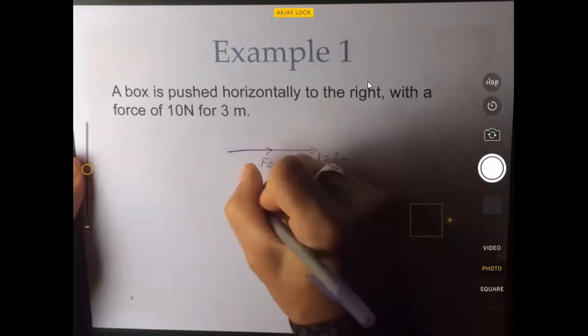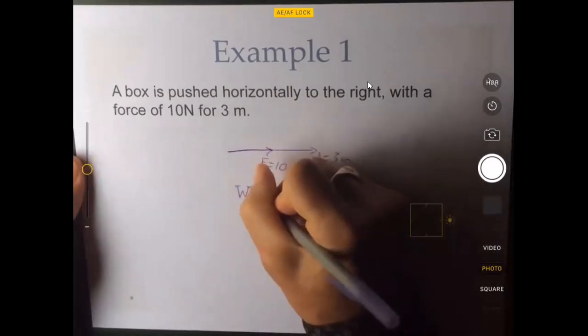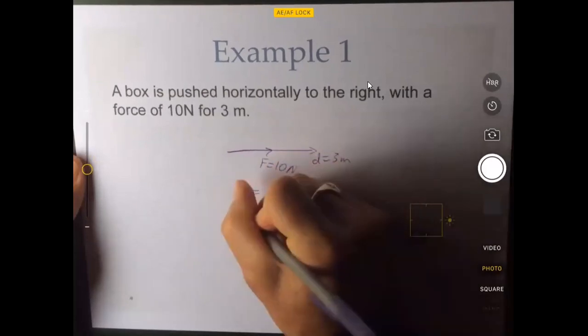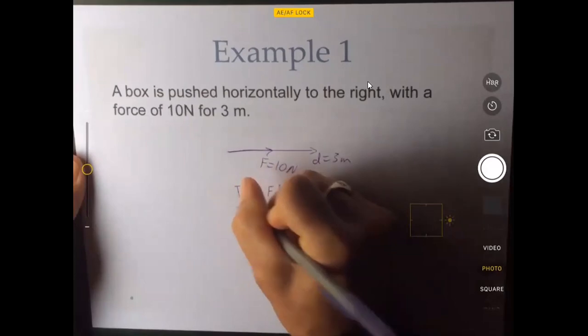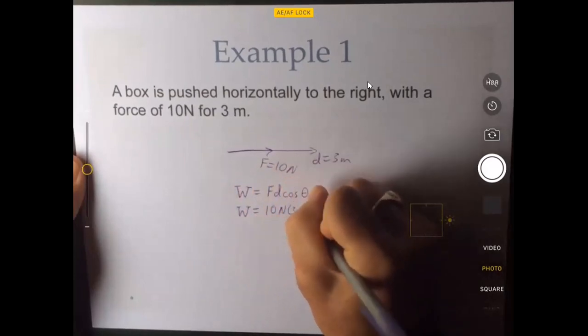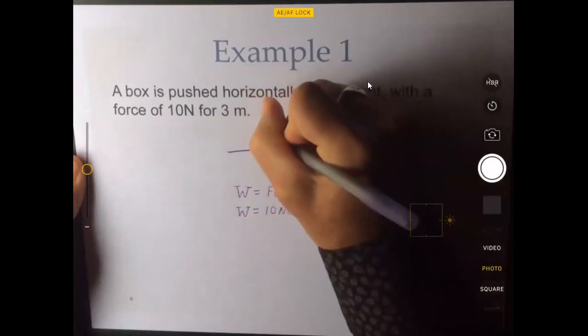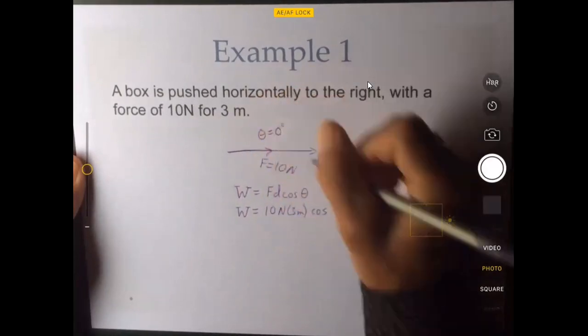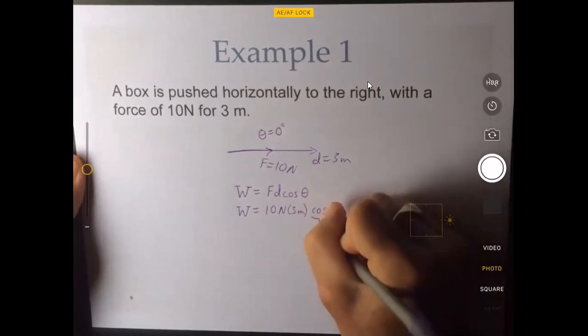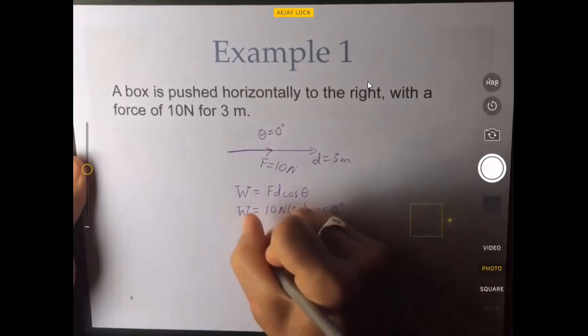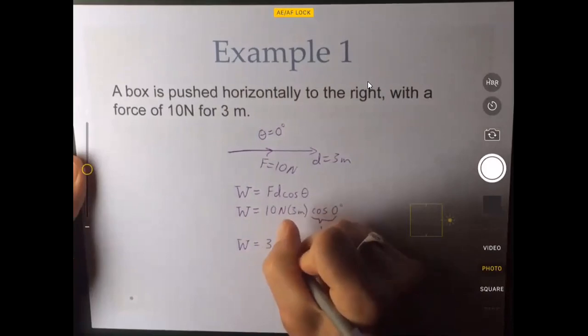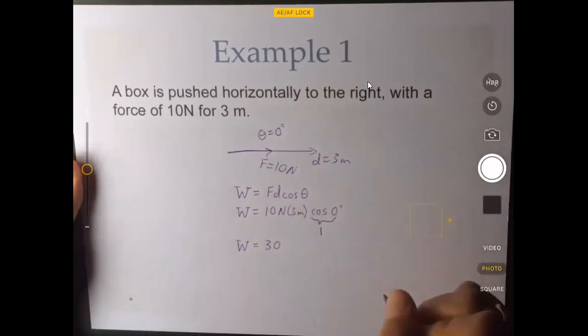Calculate the work, which we use capital W, as opposed to lowercase w, which stood for the weight. And so 10 newtons times 3 meters times the cosine, and I forgot to label it, but they're overlapping. So it's 0 degrees. And the cosine of 0 degrees, that's equal to 1. So I can do this one in my head, no calculator needed. 10 times 3 is 30. Multiply that by 1, and I get 30.